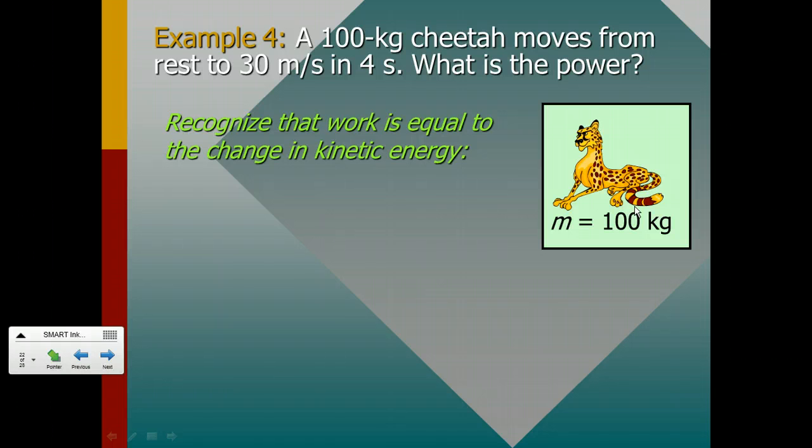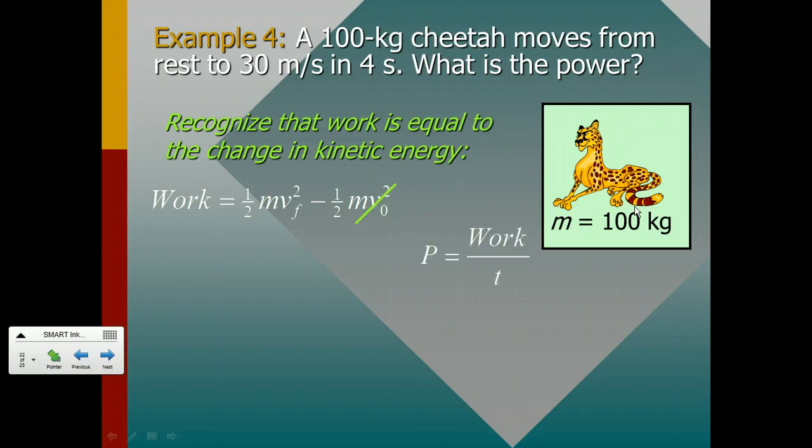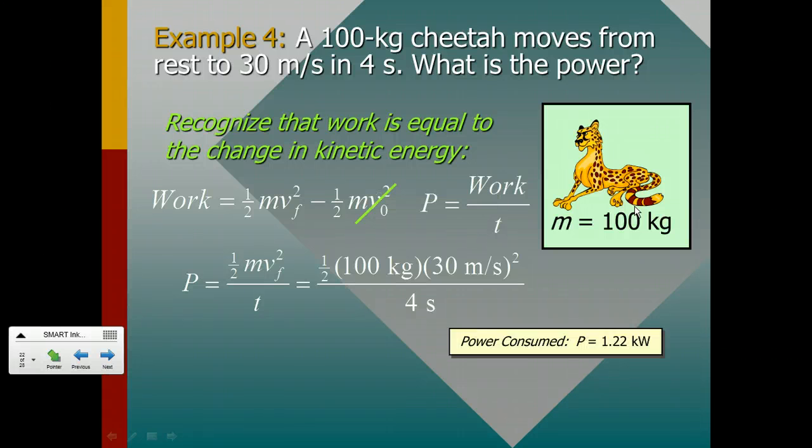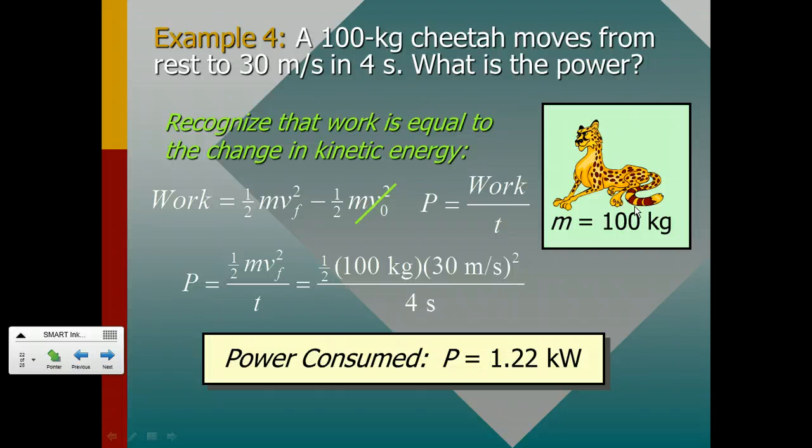Welcome back. Recognizing that work is equal to the change in kinetic energy gives us the fact that work is our final kinetic energy minus our initial kinetic energy, but our initial kinetic energy is 0. So therefore, our power, being work over time, means that we're just taking our final kinetic energy and dividing it by time, because work is equal to how much energy we increased or decreased by. So when we go through all of that, we end up with a power consumed of 1.22 kilowatts, or 1,220 watts.